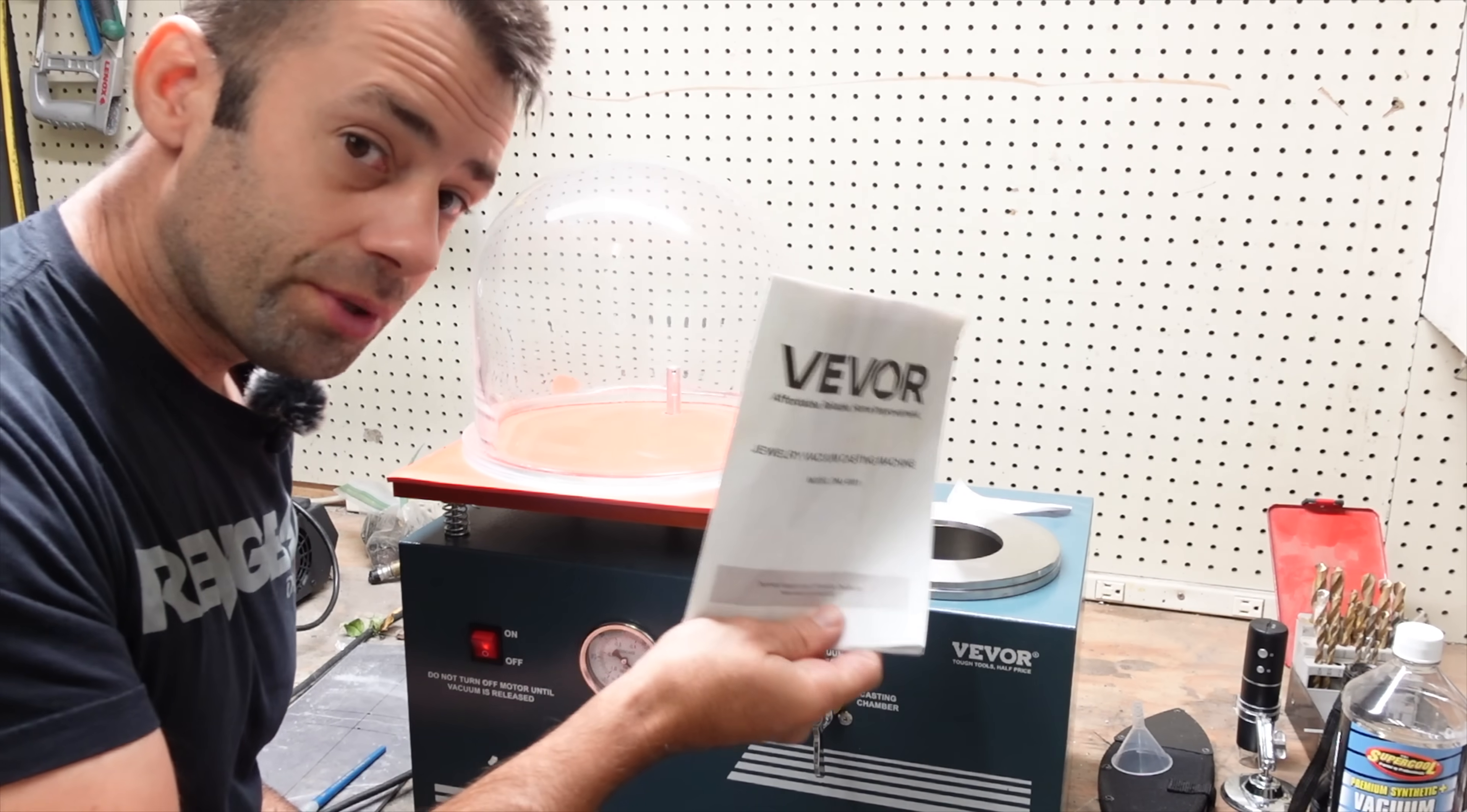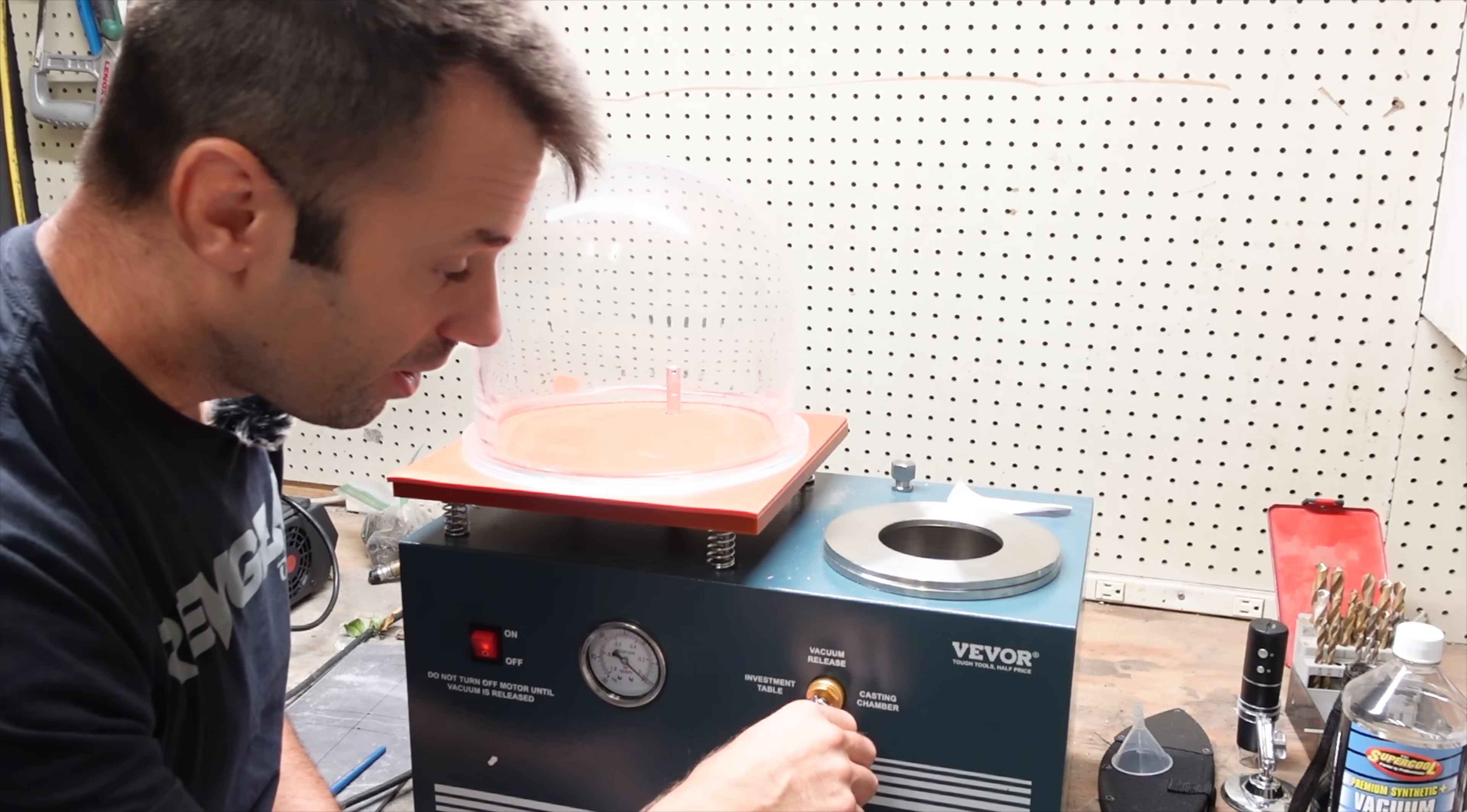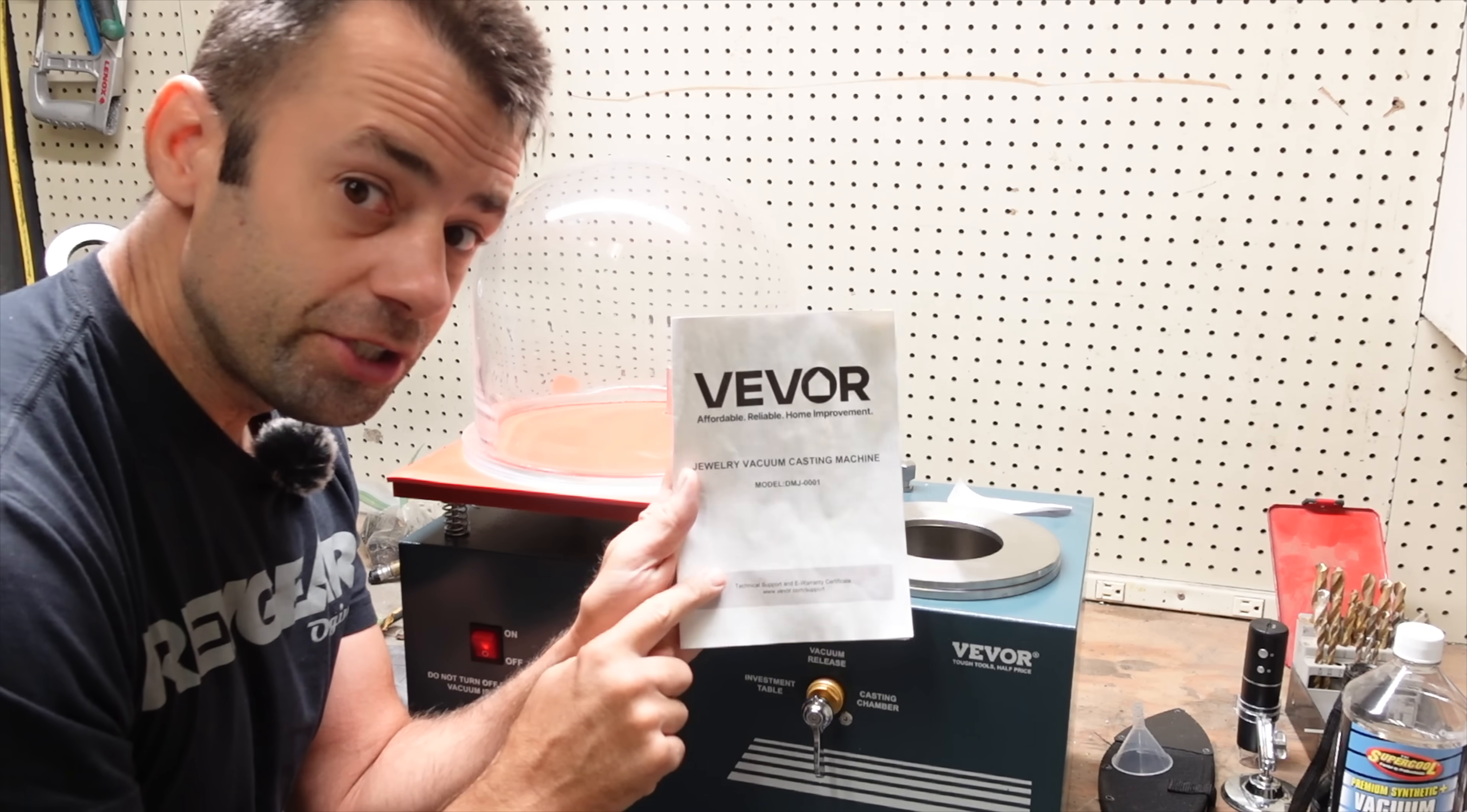Now it comes with an instruction manual. Make sure you actually read this because there's some very important things in there that you need to know. One thing being don't ever turn the machine off and then shut it off before you release the vacuum. If you shut the machine off with the vacuum chamber in suction it can suck the oil up and kind of damage your machine. Just make sure you go over that.